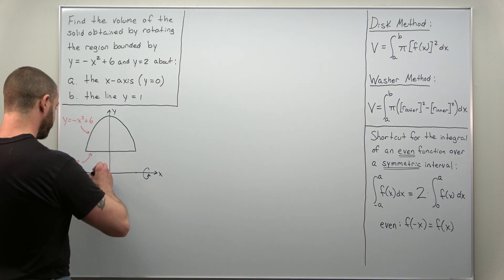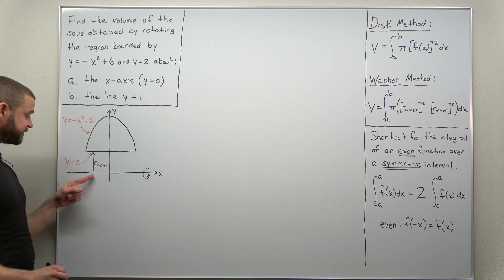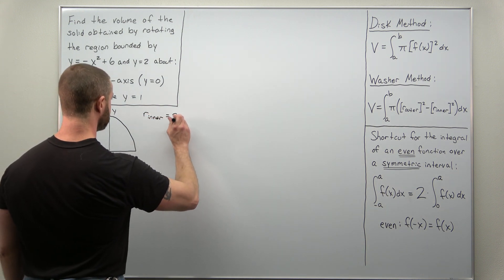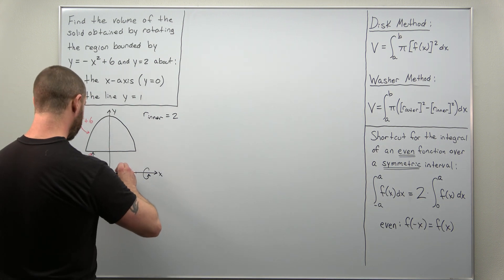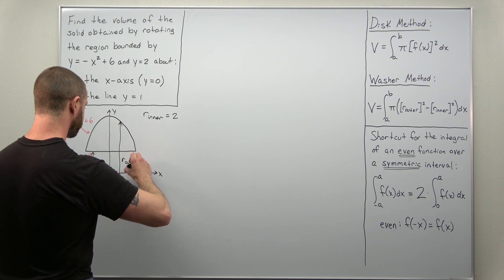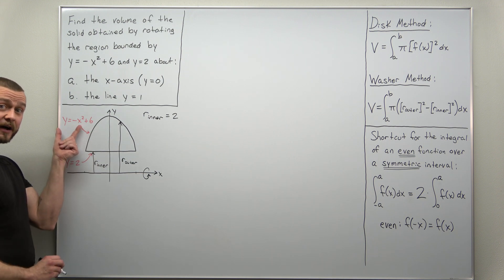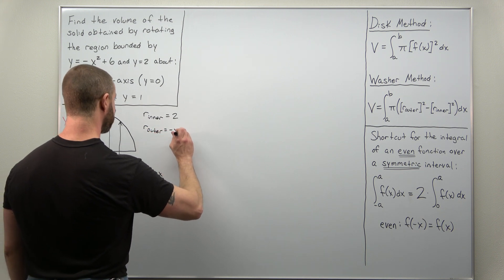From the axis of rotation to the inner portion, that distance is r inner — simply the distance from the x-axis to the horizontal line y equals two. So r inner for part a is just two. If we draw what the outer radius looks like, going from the axis of rotation to the outer edge of the region, the distance from the x-axis up to that curve is exactly what the y or function value gives you. So r outer is just negative x squared plus six.